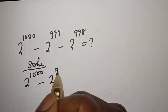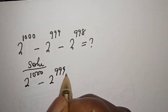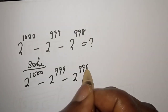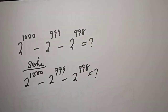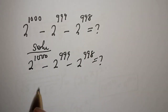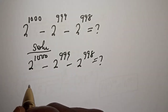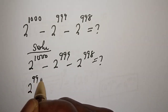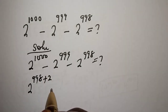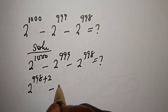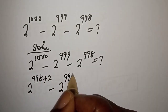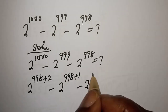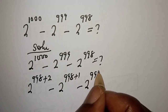Solution: 2 raised to power 1000 minus 2 raised to power 999 minus 2 raised to power 998. This can be written as 2 raised to power 998+2, minus 2 raised to power 998+1, minus 2 raised to power 998.